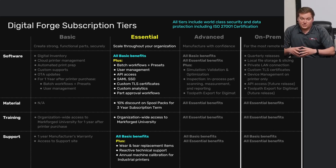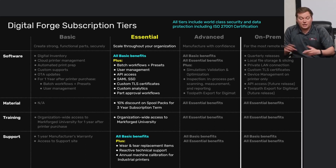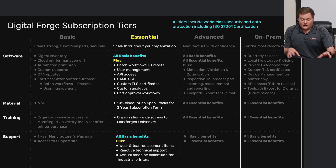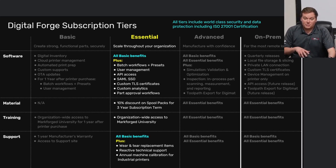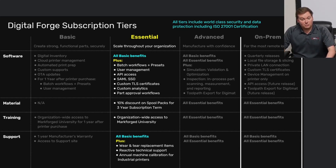You also get custom analytics. There are analytics panes within Eiger, but with custom analytics you can go in and specifically name and categorize metrics — like print time — however you want. And there are part approval workflows: if you have less experienced users, a more experienced admin or team leader can approve a part before it goes to print, helping reduce the likelihood of print failures.